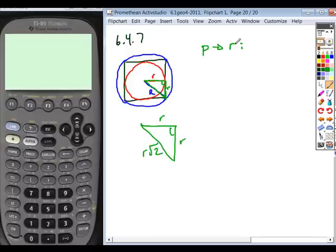r root 2. So the ratio of parts is r to r root 2, or 1 to root 2. What does that mean the ratio of their areas is going to be? 1 squared to root 2 squared.